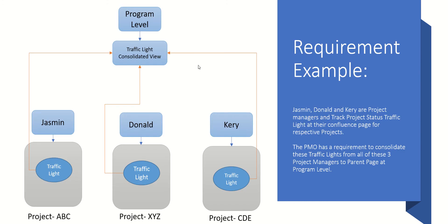So this macro helps us with consolidating information from different project pages and providing a cockpit view at the program level. As an example, we have three project managers — Jasmine, Donald, and Kerry — and they have their project pages: Project ABC, Project XYZ, and Project CDE. Within these project pages they are capturing the traffic light and highlights as well as the risks related to each specific project. The ask is to consolidate these traffic lights from the project pages onto the cockpit page — a consolidated traffic light view that can be seen by management.